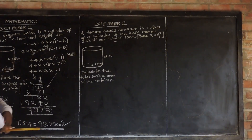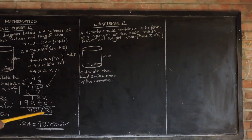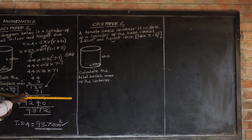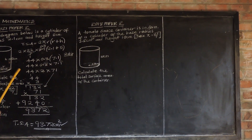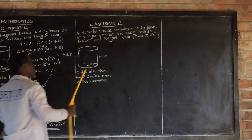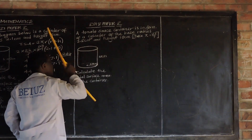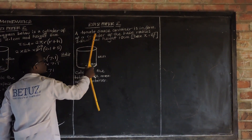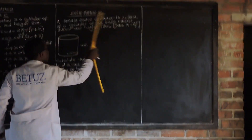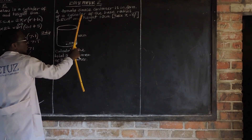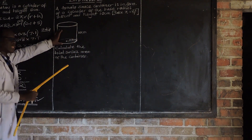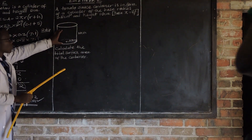So now, let us look at the 2018 paper, question 2, a question on mensuration — specifically on how to find the total surface area of a cylinder. The question says: a tomato sauce container is in the form of a cylinder. The base radius of this container...